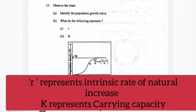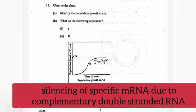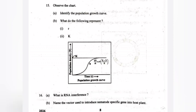Question 16: A - What is RNA interference? Answer: Silencing of specific mRNA due to complementary double-stranded RNA. B - Name the vector used to introduce nematode specific gene into host plant.